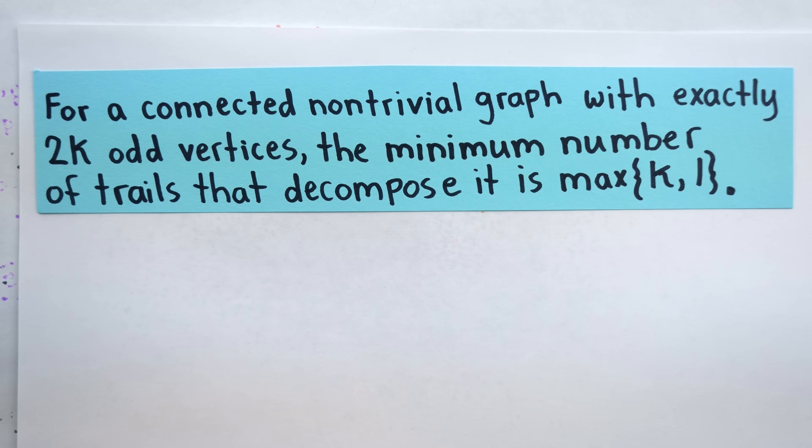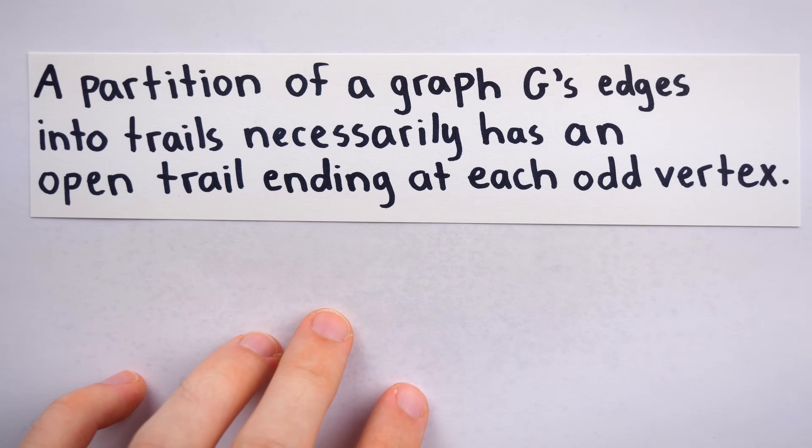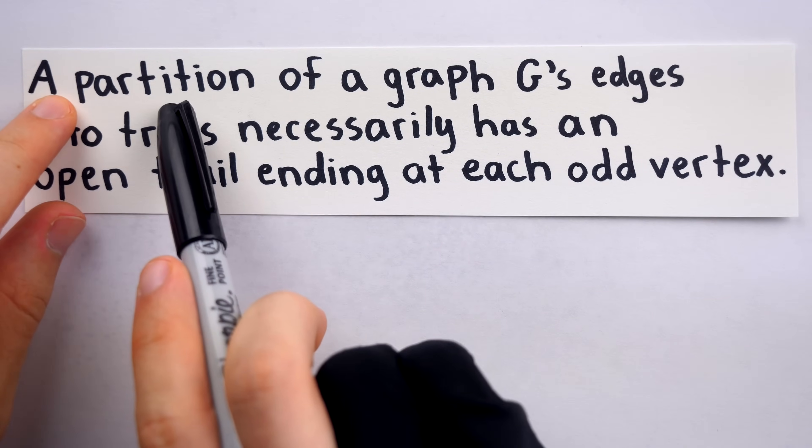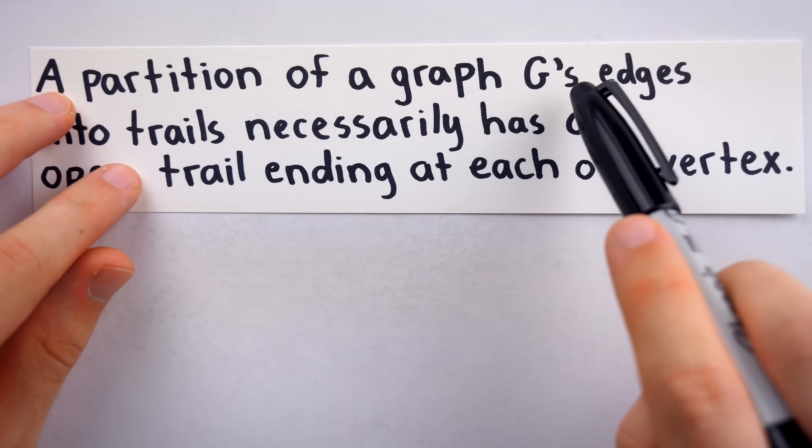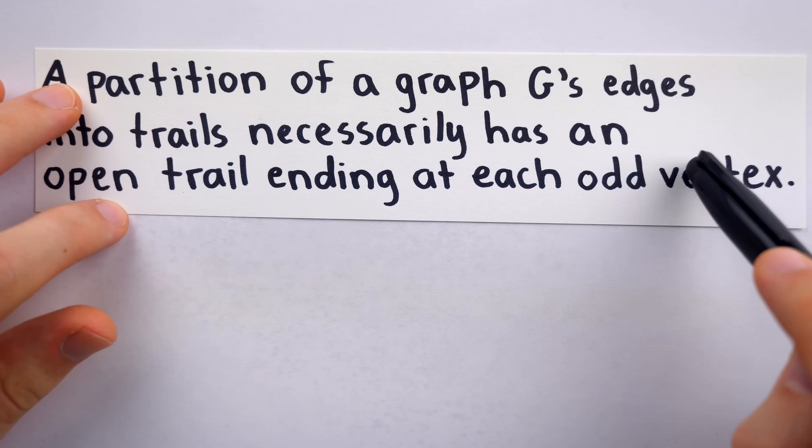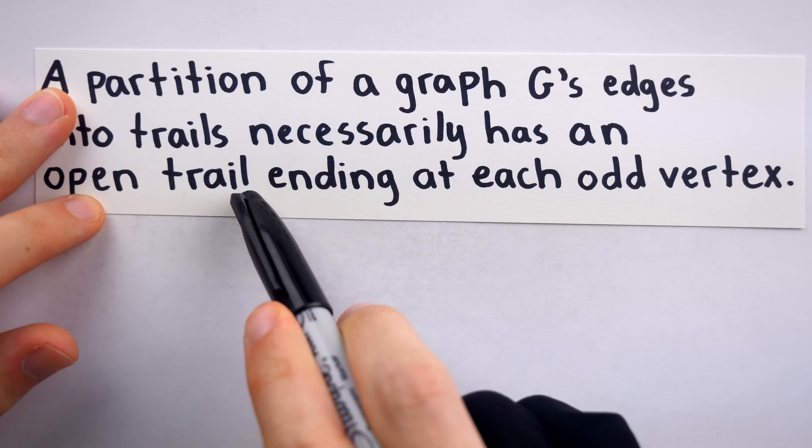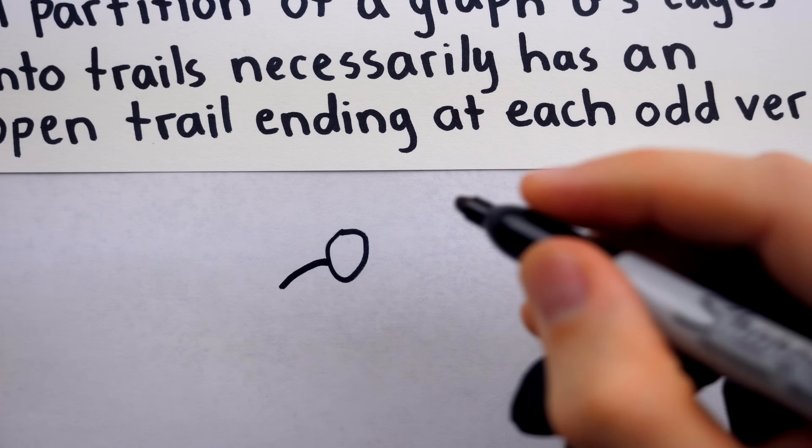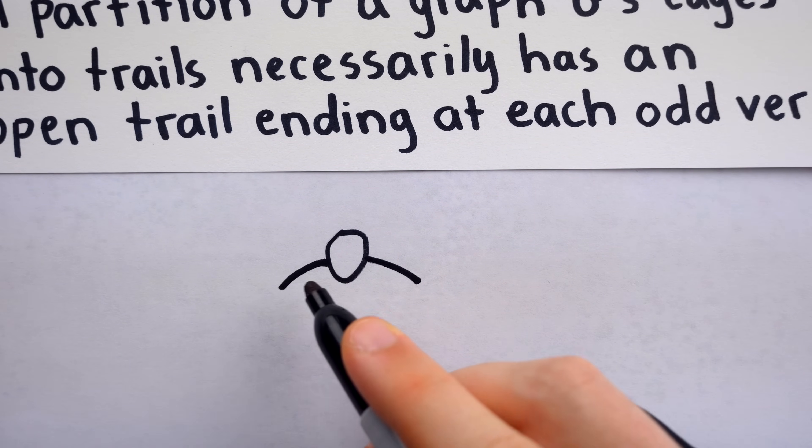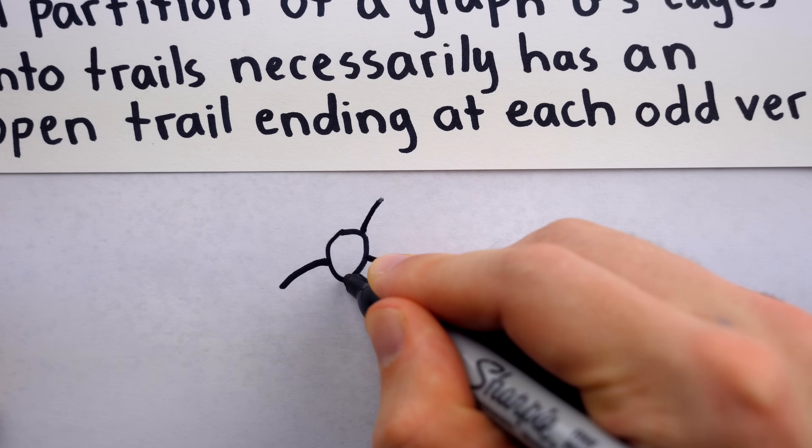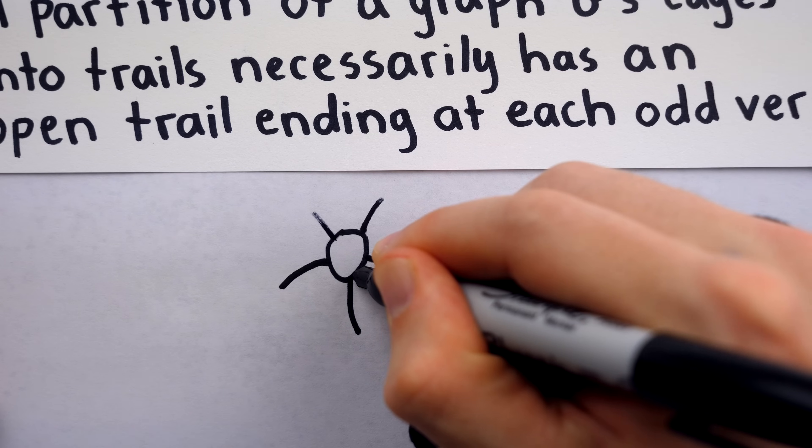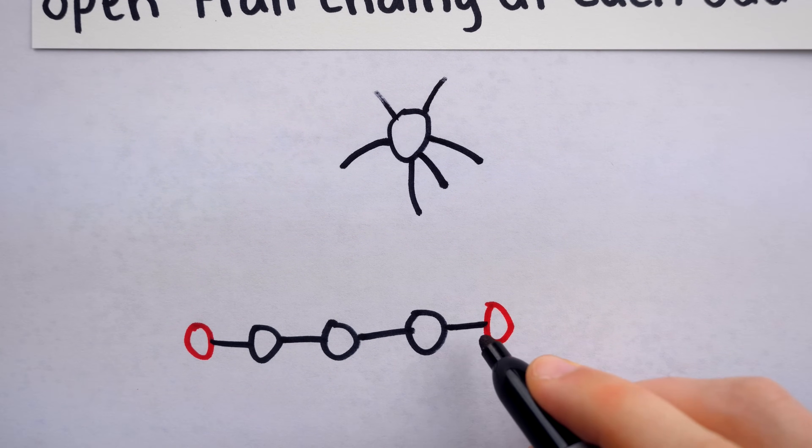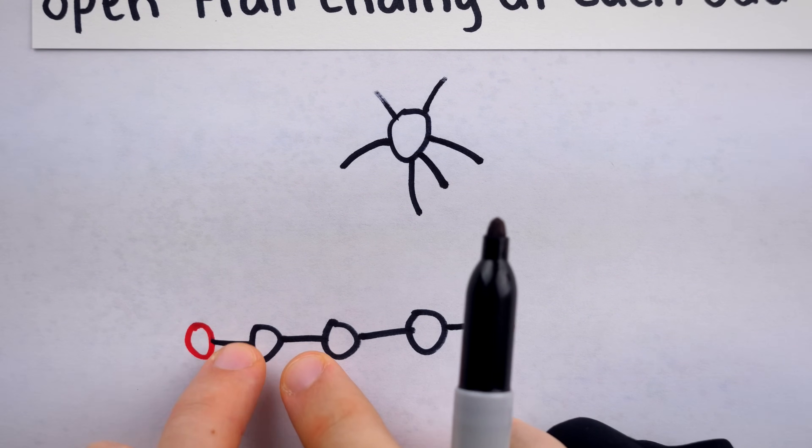Let's start off with the sufficiency part. Here is a pretty simple observation. A partition of a graph G's edges into trails necessarily has an open trail ending at each odd vertex. Now, what does this mean? Well, when we say a partition of a graph G's edges into trails, just read that as we've decomposed the graph into trails. And when we do that, the odd vertices will have to be places where the open trails in the decomposition end. Like we discussed, for an even degree vertex, each time a trail arrives at the vertex, it will also leave, so the degree will come in pairs of edges. Hence, a vertex which is not the ending of an open trail is going to have an even degree. For a vertex to have an odd degree, it will have to be at the ending, either end, of an open trail. That way, only a single edge is contributed to the vertex's degree, instead of a pair of edges.